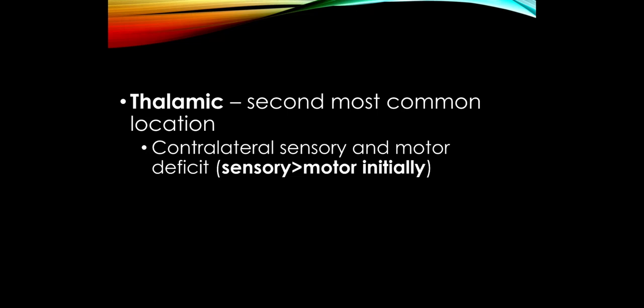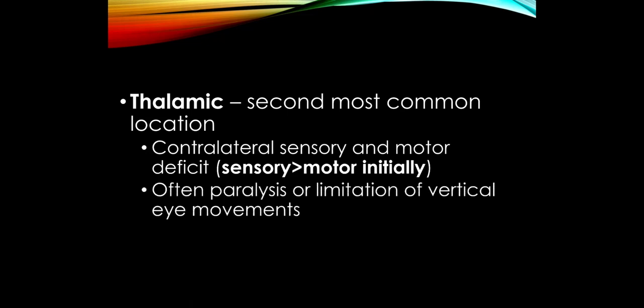Second most common is thalamic hemorrhage. Again, the story is someone with long-standing high blood pressure — chart review showing blood pressure never below 160/95 for years. This is a posterior circulation hemorrhage mainly involving the thalamus. Early on there is more sensory loss on the opposite side of the body, but it may extend to involve motor pathways, overlapping with putaminal hemorrhage. The thalamus sits right on top of the midbrain, which is important for vertical eye movements, so these patients may have impaired ability to look up and down. A really large thalamic hemorrhage can compress the brain stem, and therefore mortality is higher.